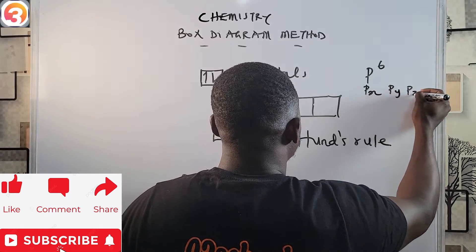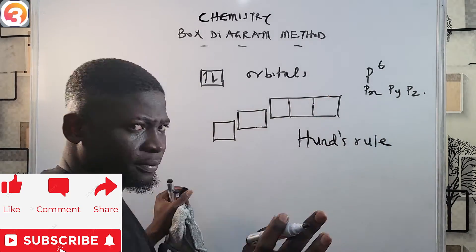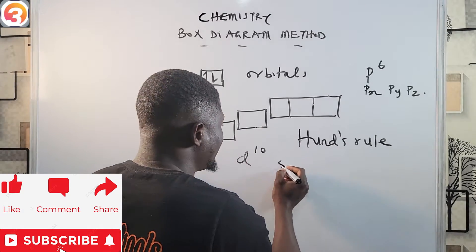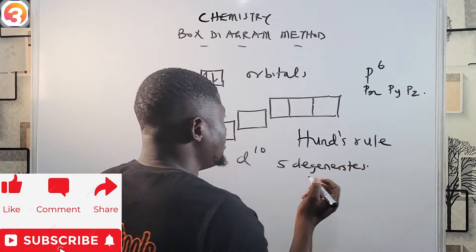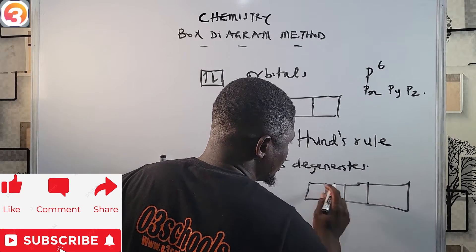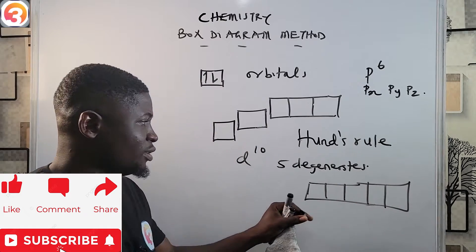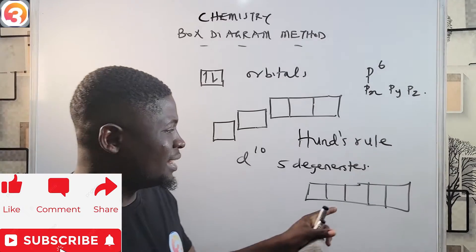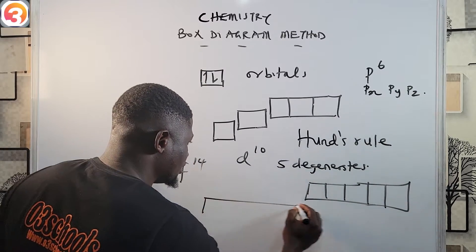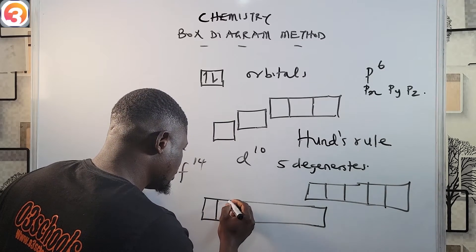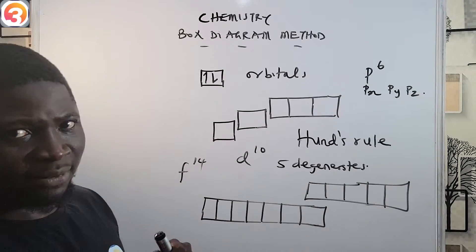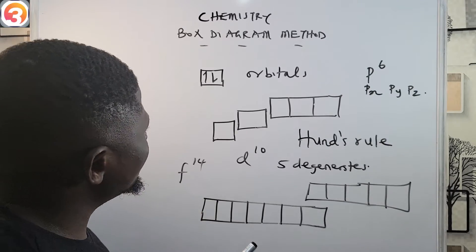The p orbital can take a maximum of six electrons in three degenerates: px, py, and pz. The d orbital can take 10 electrons in five degenerates. If it were a d orbital, the box would be divided into five sections. The f orbital can take 14 electrons in seven degenerates — seven boxes.